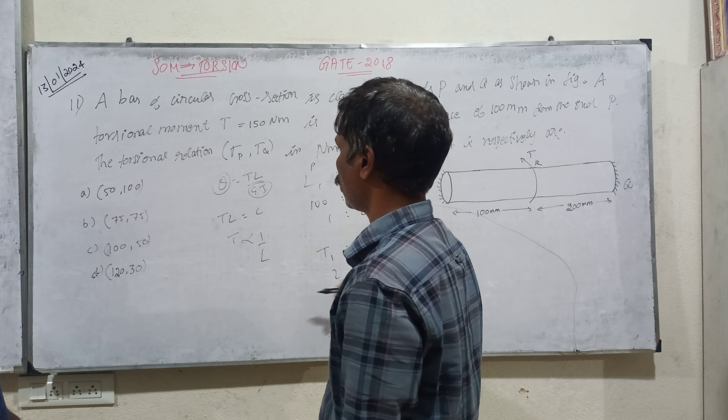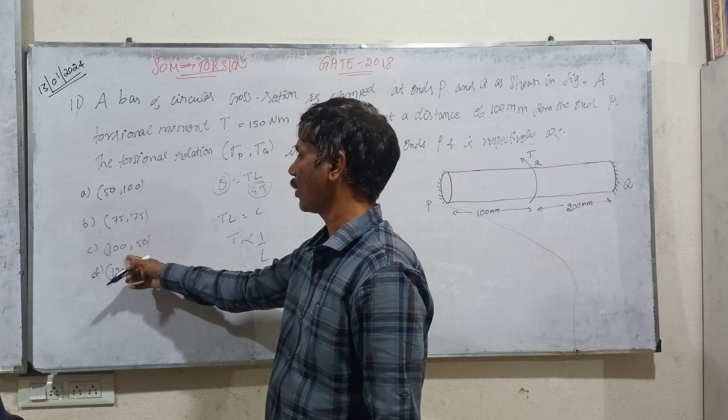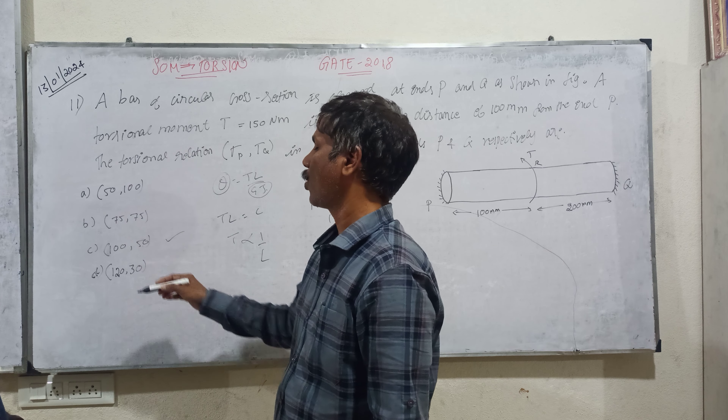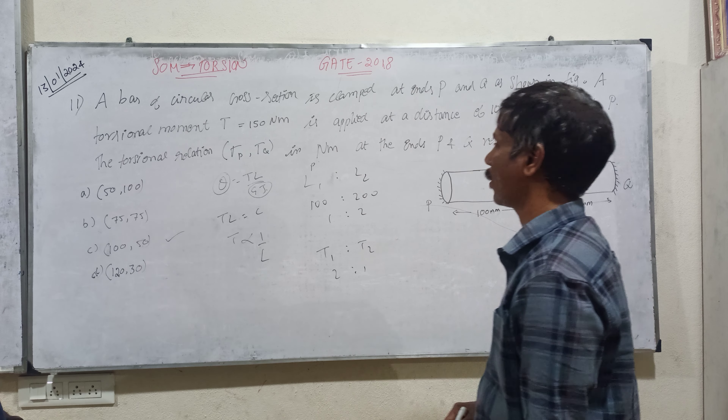So if the L ratio is 1 to 2, then the T ratio is 2 to 1. Therefore the answer is option C.